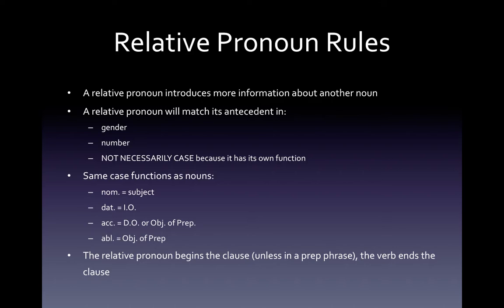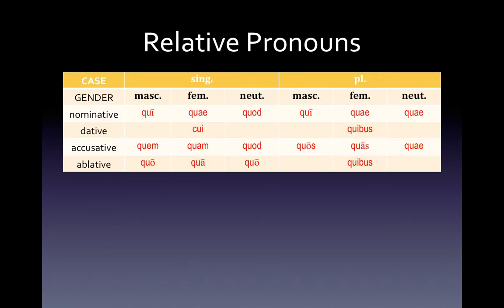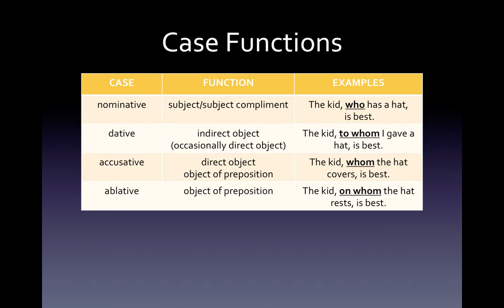We'll have an example of that later, and the verb always ends the clause. This is the chart — it will pay off huge dividends if you take some time to memorize it. Here's an example of how to translate relative pronouns according to their function. If it's nominative, you're going to translate it usually as 'who,' unless it's neuter, you can translate it as 'which.' So for example, 'the kid who has a hat is best.' If it's dative, just like with nouns, we usually put 'to' or 'for' in front of it: 'the kid to whom I gave a hat is best.' If it's accusative and it's the direct object, usually translate it as 'whom': 'the kid whom the hat covers is best.' If it's ablative and part of an object of a preposition, just as in Latin and English, the preposition will come first: 'the kid on whom the hat rests is best.'